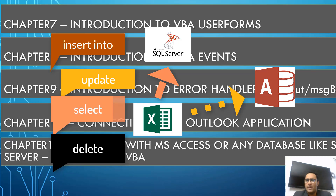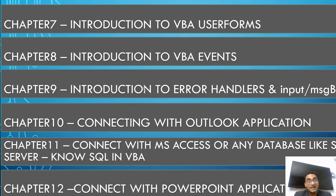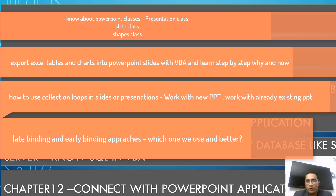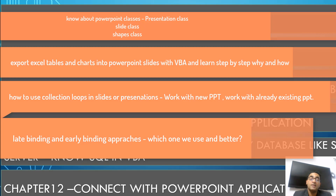Then we talk about connecting Excel VBA with PowerPoint. If every month you manually copy 100 charts from Excel into PowerPoint — an entire day's work — you can create code to export all those charts automatically. We'll cover PowerPoint classes: the Application, Presentation, Slide, and Shape classes, and use collection loops in PowerPoint. It's huge.